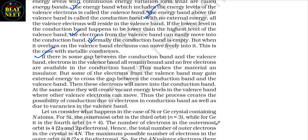If there is some gap between the conduction band and the valence band, all electrons in the valence band remain bound and no free electrons are available in the conduction band — this makes the material an insulator. But some electrons from the valence band may gain external energy to cross the gap and enter the conduction band, creating vacant energy levels in the valence band where other valence electrons can move. This creates the possibility of conduction due to electrons in the conduction band as well as due to vacancies in the valence band.